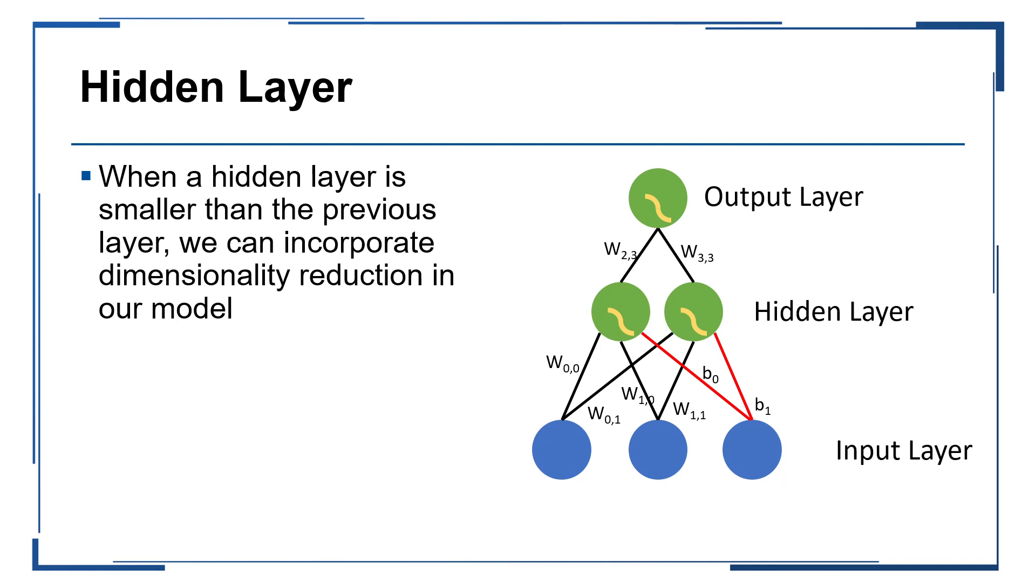We can also construct our hidden layers to accomplish certain goals within our models. For example, by constructing our networks such that a hidden layer has fewer nodes than the preceding layer, it is effectively incorporating dimensionality reduction into the model itself. Some of you might be familiar with other dimensionality reduction methods such as principal components analysis and exploratory factors analysis, but in this case the model can help in removing redundant or noisy information as part of its construction of the predictive features.